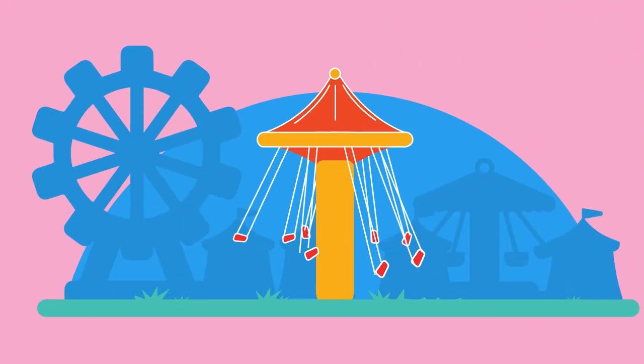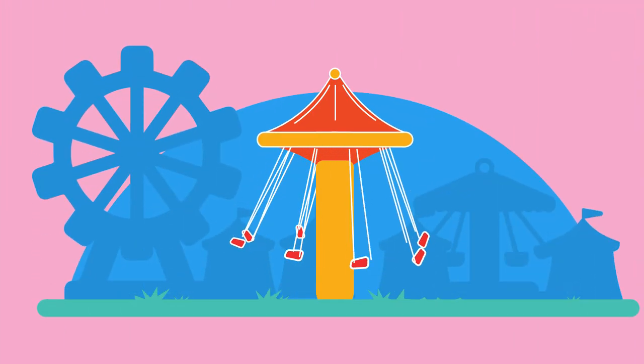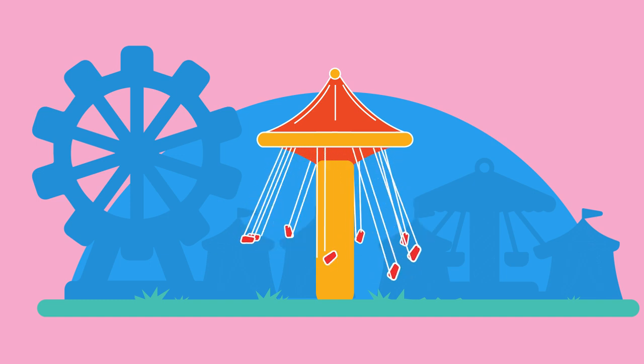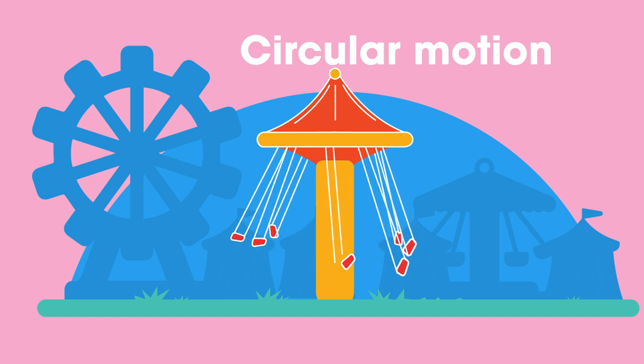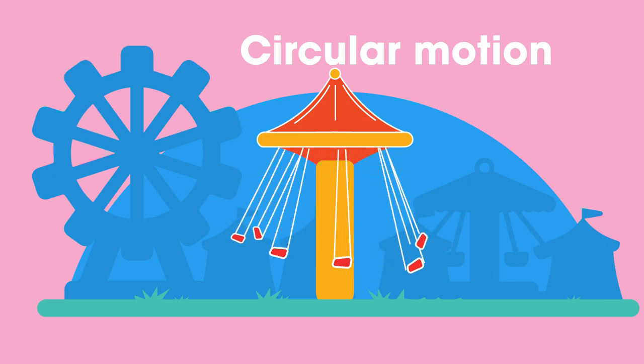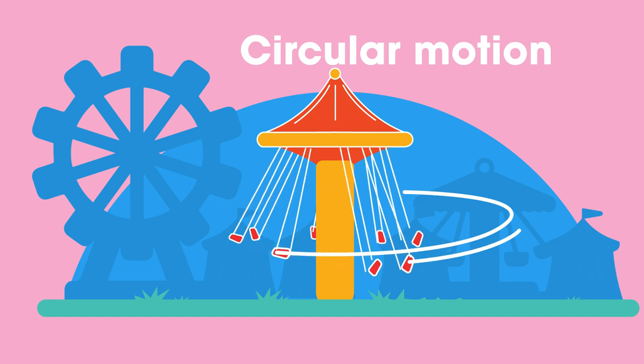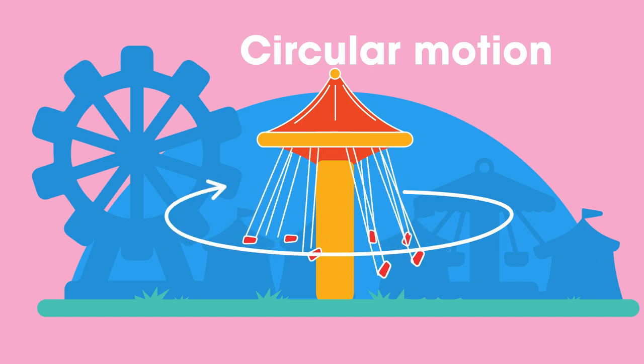Have you ever been on a merry-go-round in a carnival? As you are swinging around, you are actually undergoing circular motion. In this video we will explain why an object moving in a circle with a constant speed has a changing velocity.